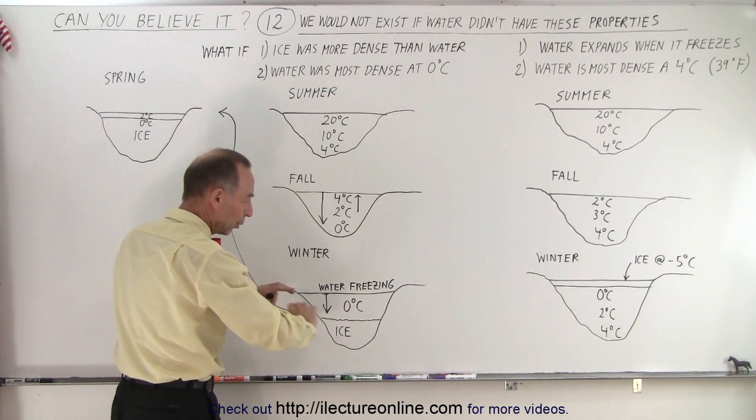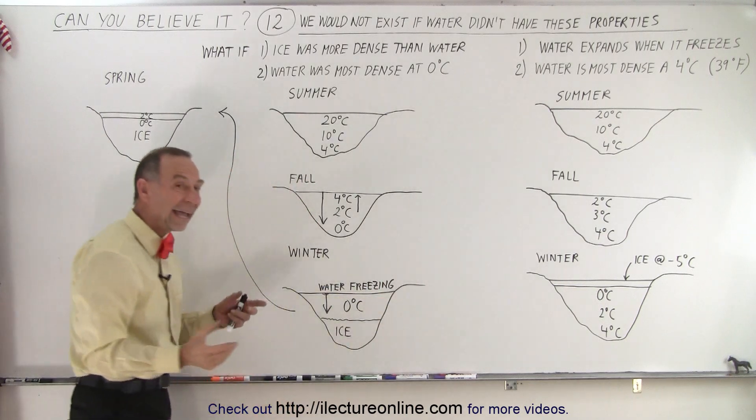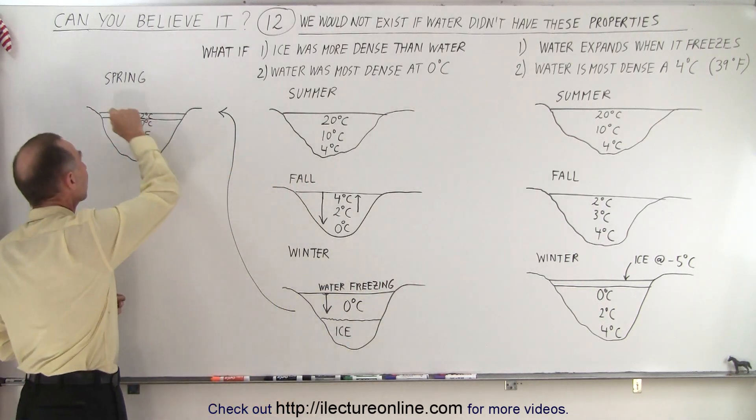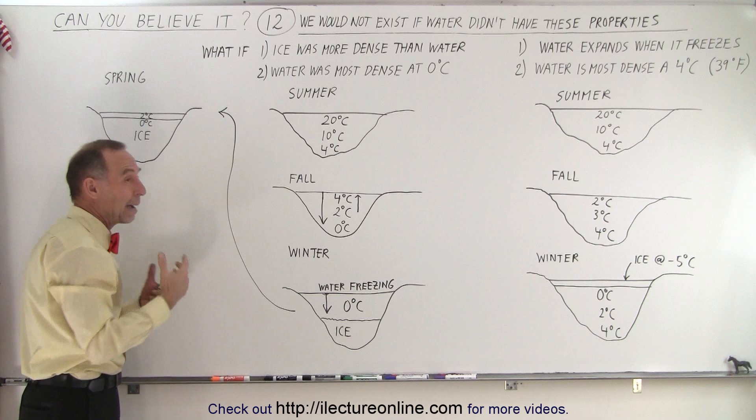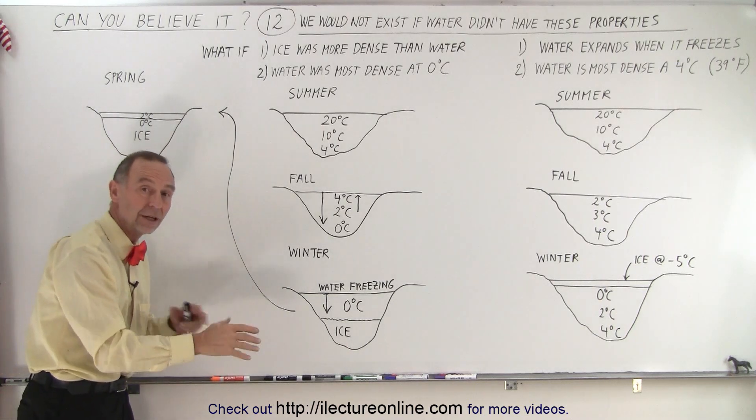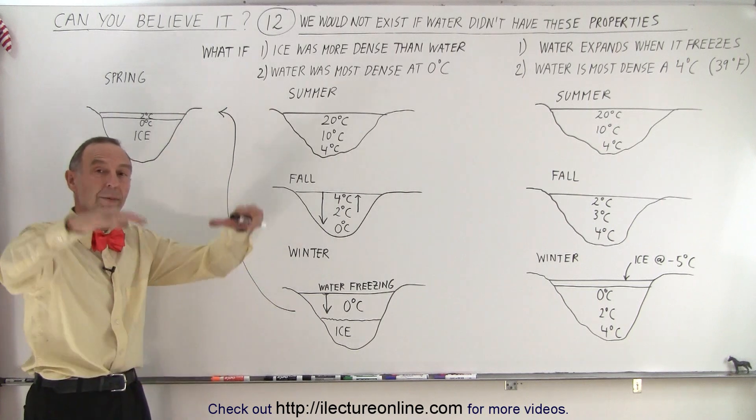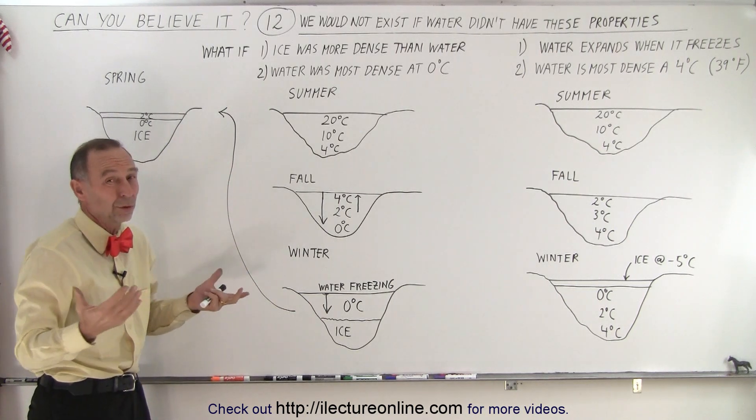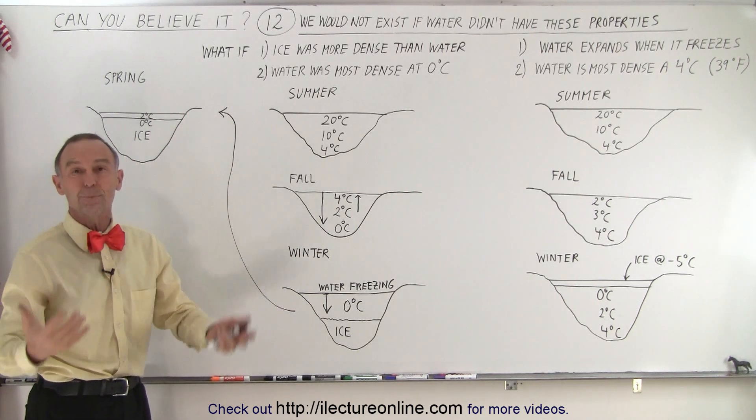The whole lake would be full of ice. And only in the summertime would you have a thin layer of water. That would happen to the oceans as well, especially the Arctic Oceans and near the Antarctic. Vast quantities of oceans would become big blocks of ice. And the whole world would potentially become a big ball of ice.